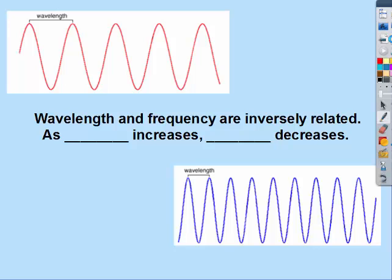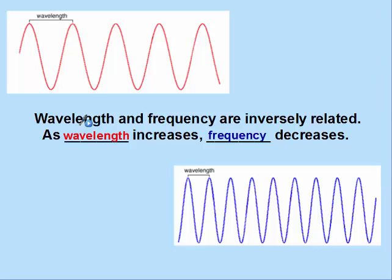Wavelength and frequency are inversely related: as wavelength increases, frequency decreases. Assuming both boxes on the top and bottom represent one second, the blue box on the bottom has a greater frequency than the red one, because the wavelength is shorter in the blue diagram than in the red diagram.